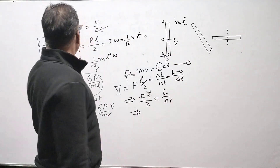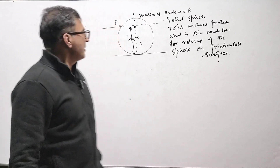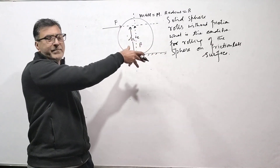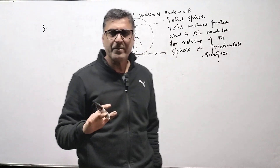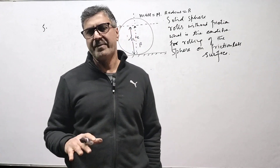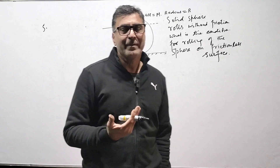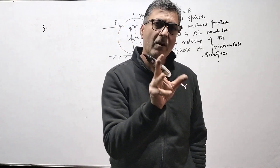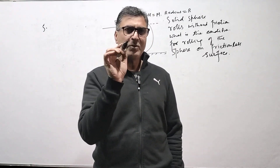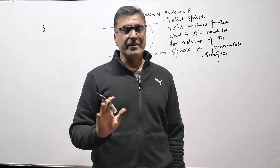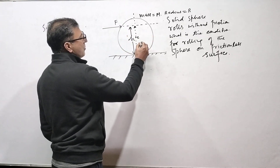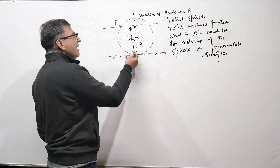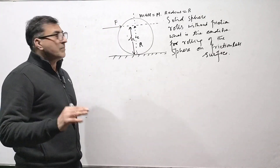Now the fifth problem: there is a sphere on a frictionless surface. Normally rolling requires friction, but here we apply a force F at height h above the ground. We want to find the height h at which the force should be applied so that rolling without slipping occurs from the start — even without friction. What should be the relation between h and R?